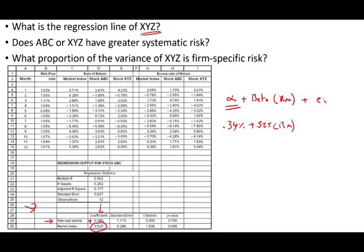So we are given the data. We are given the excess return for XYZ right here. So this is going to be the Y-axis, and we are given the market index, which is the independent variable, the X-axis. So what I did, I took those two columns. I'm going to transfer them to an Excel sheet. I already did, and I'm going to run the regression.